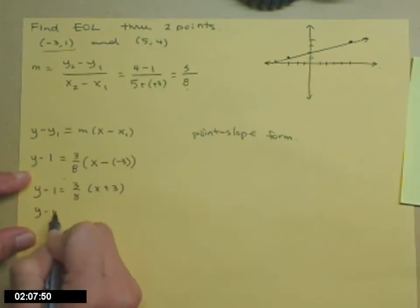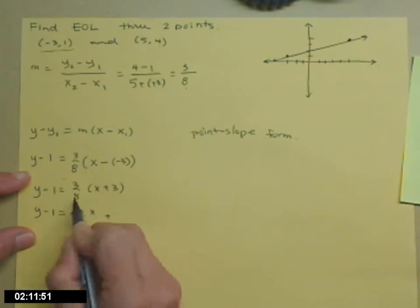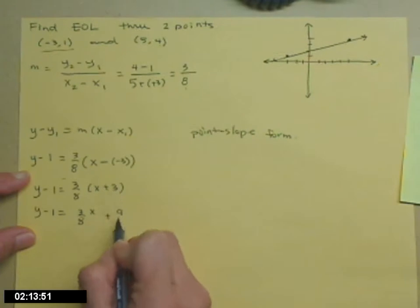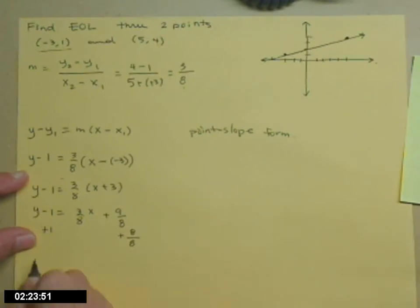y - 1 = 3/8(x + 3). Distribute the 3/8: 3/8x plus—think of this 3 as 3/1 if you need to—make sure you get 9/8 there. Add 1 to both sides. I'll write the 1 as 8/8 on the right-hand side, so that I get y = 3/8x + 17/8. So we'll call that 2 and 1/8 so we can see it on our graph.